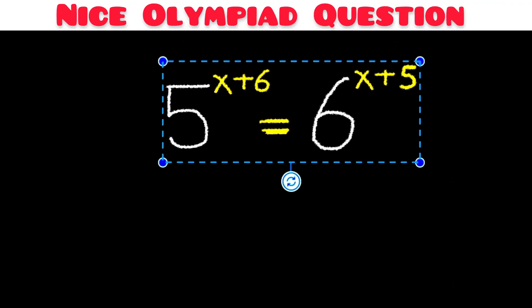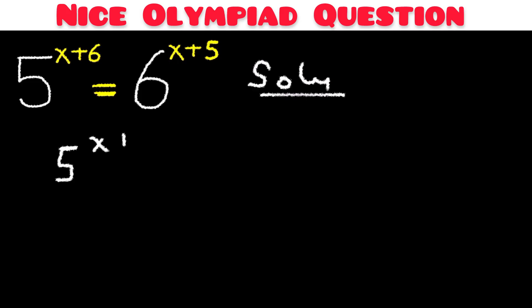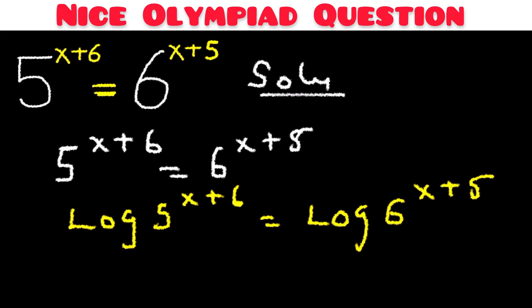So let's find the value of x in this equation. To solve it, we introduce logarithms on both sides. We have the log of 5 to the power of (x plus 6) is equal to the log of 6 to the power of (x plus 5).